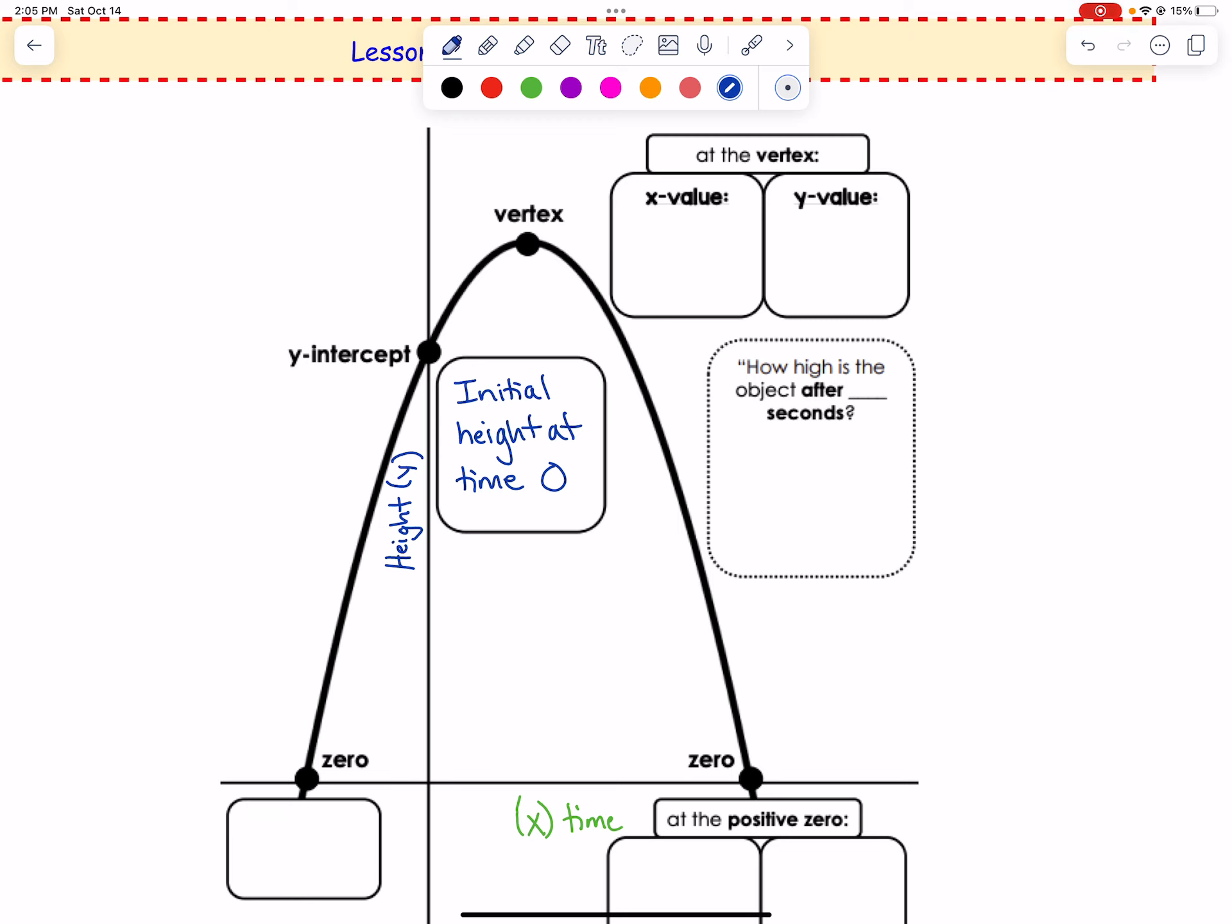At your vertex, the x-value will be the time that's at the highest point. Notice this vertex is the highest point, so it's like a maximum height at that specific time.